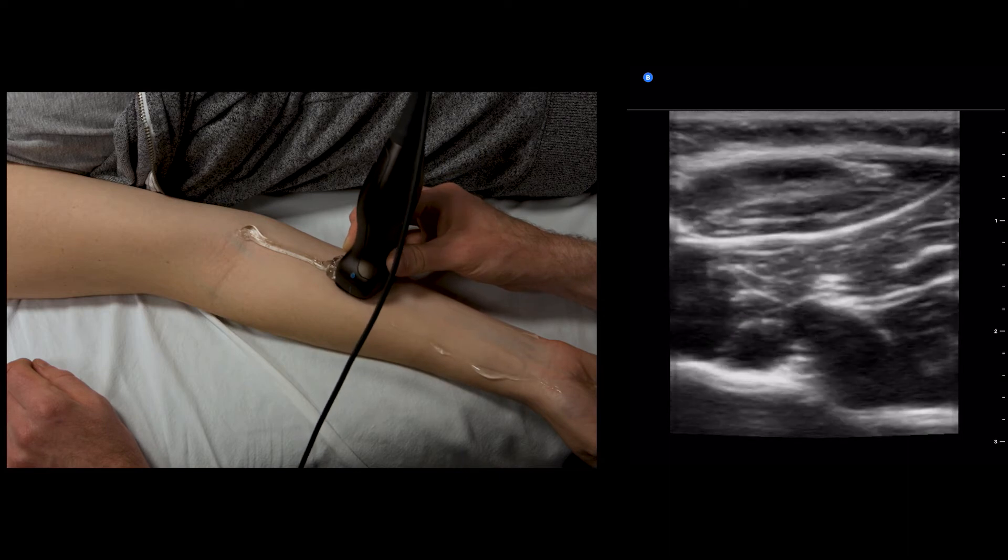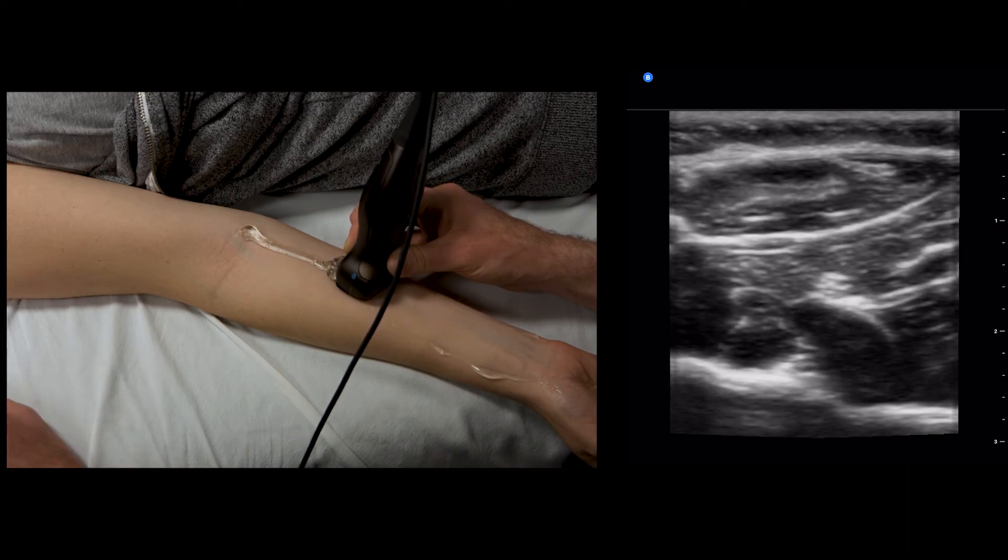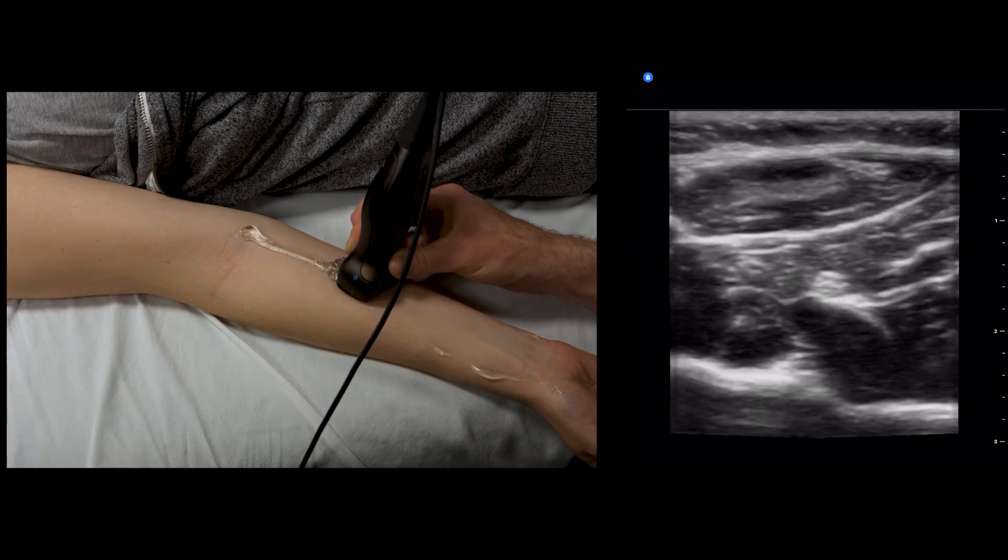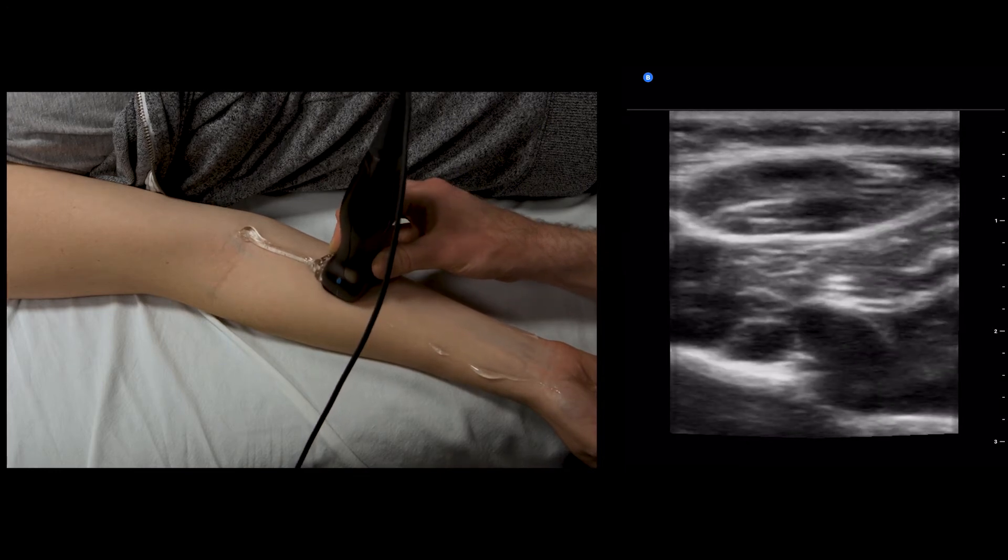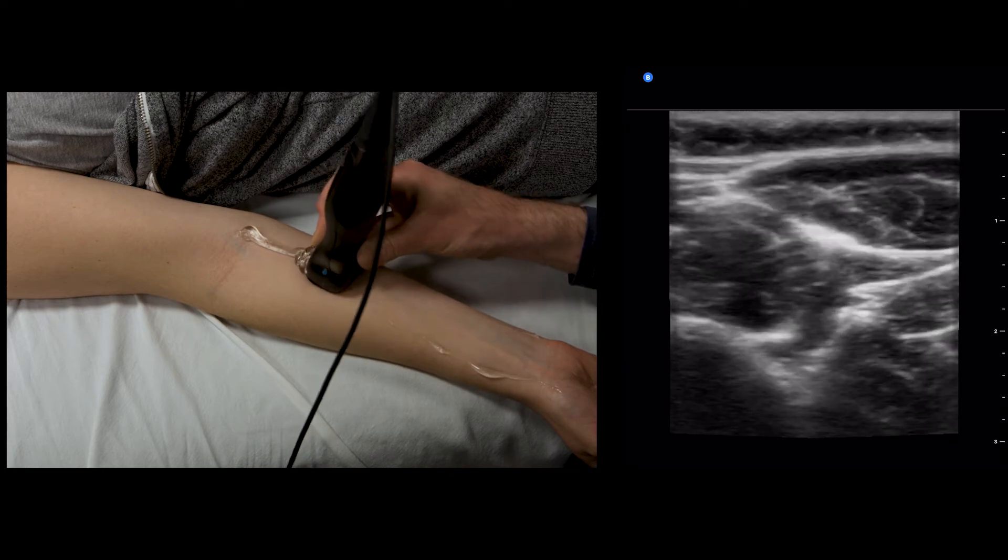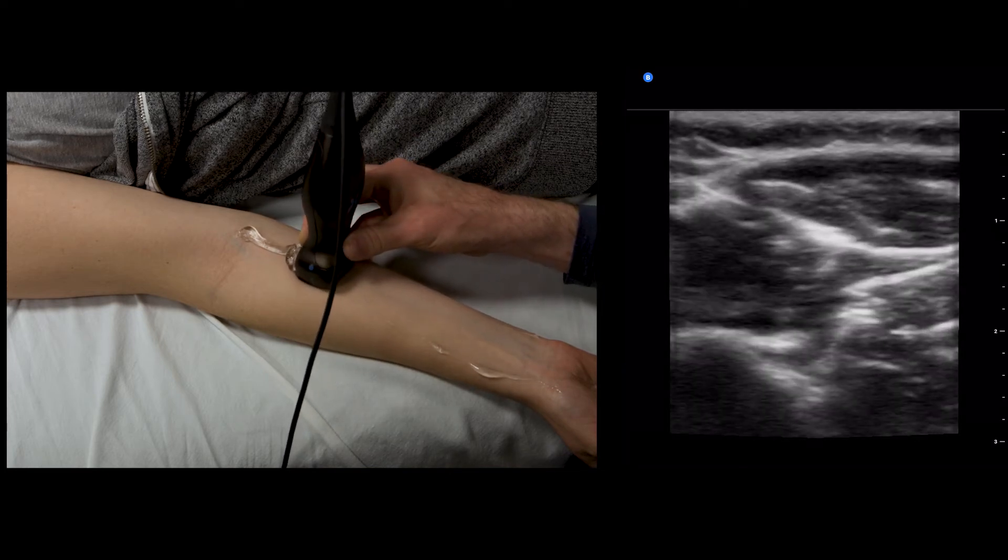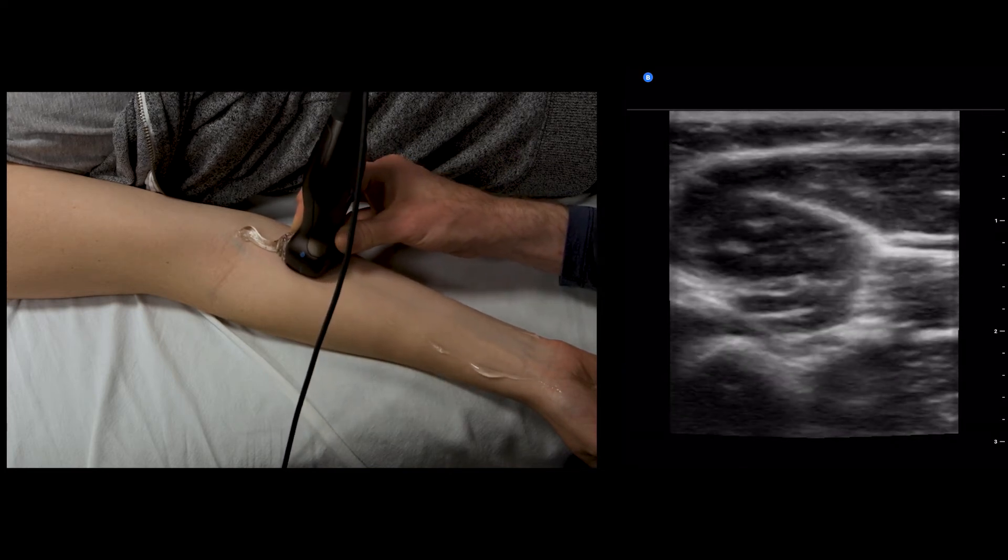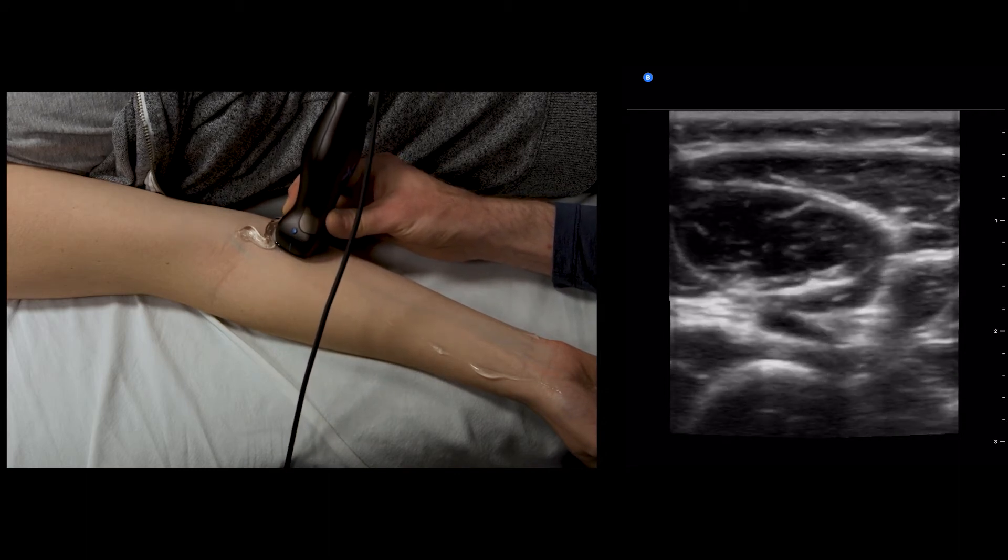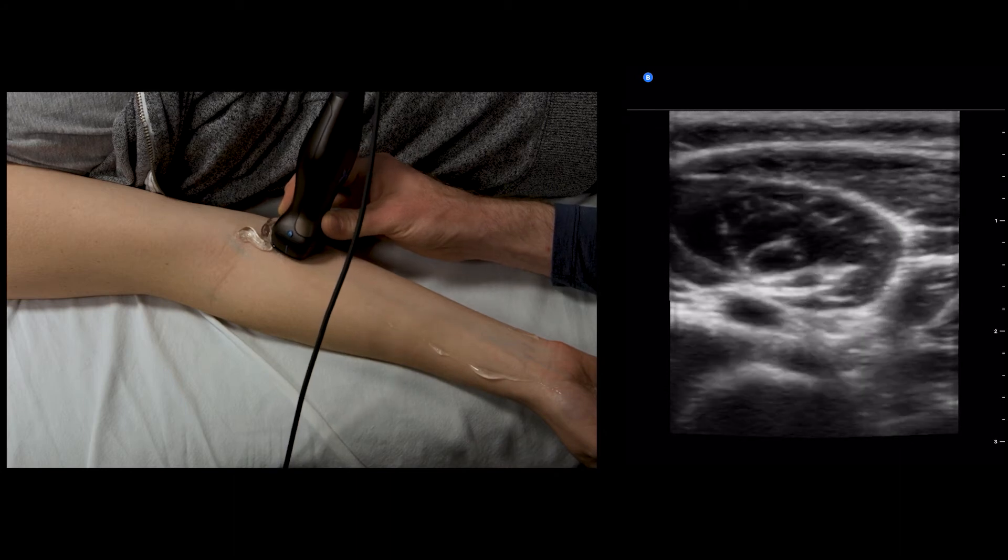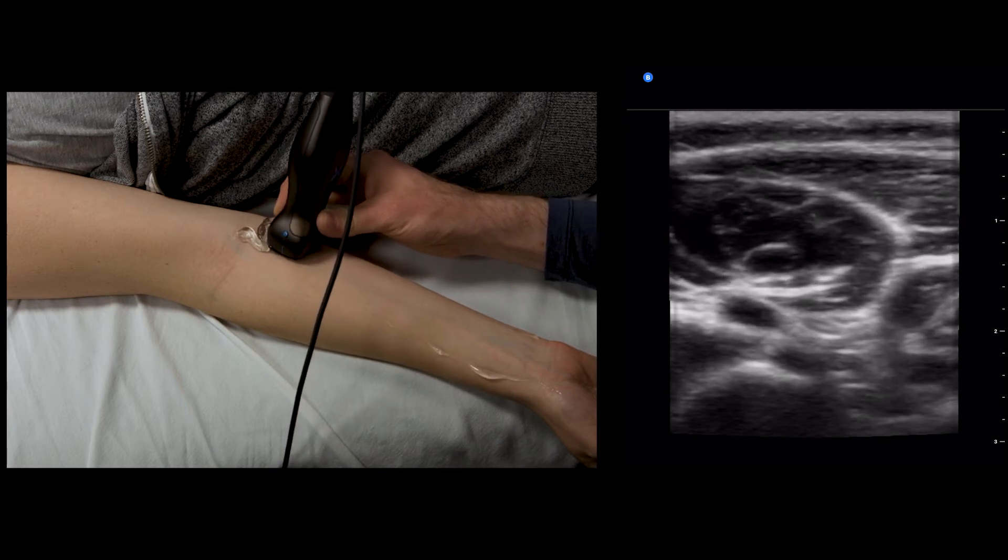The anterior interosseous nerve is just to the left or radial to that artery. We can follow the anterior interosseous nerve proximal, and it joins up with the median nerve here in the medial aspect of the proximal forearm.